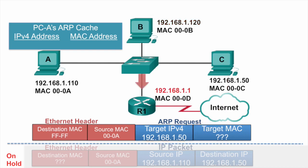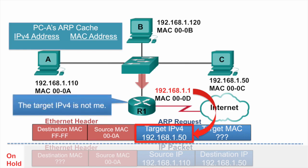Router R1 also receives this ARP request. Its ARP process examines its own IPv4 address and compares that against the target IPv4 address, and also realizes this is not its IPv4 address, so it does not need to send the ARP reply. By the way, routers will not forward ARP requests out other ports.